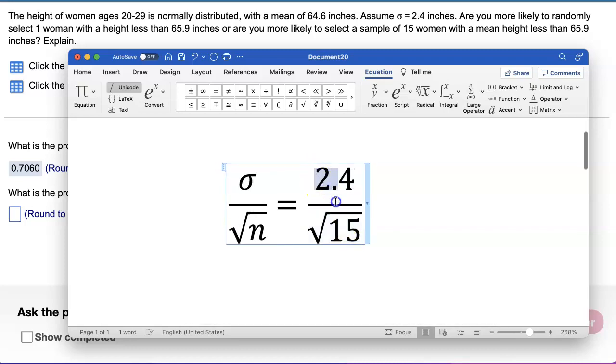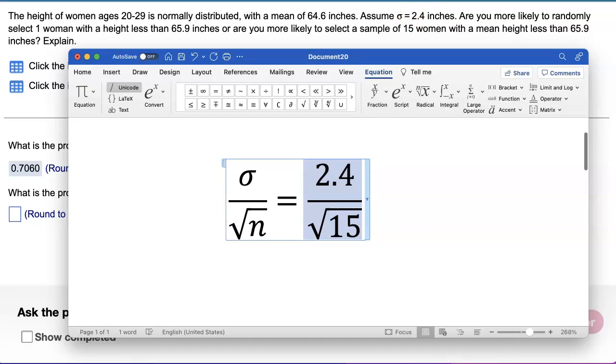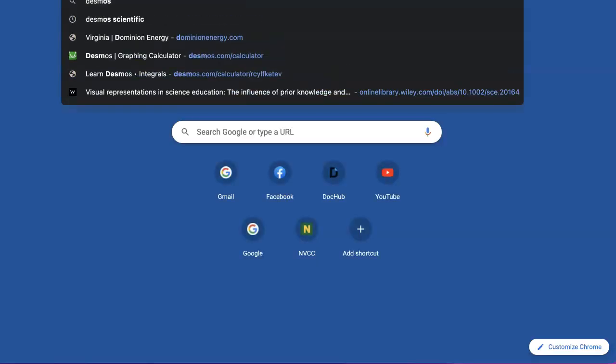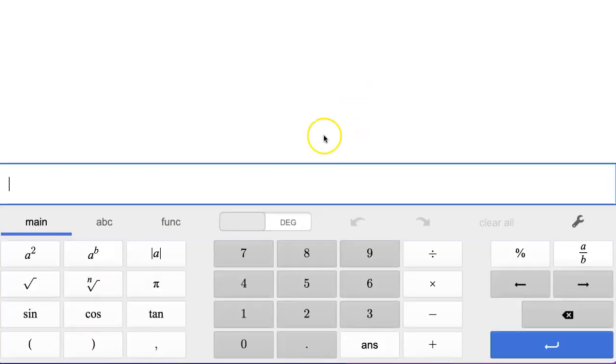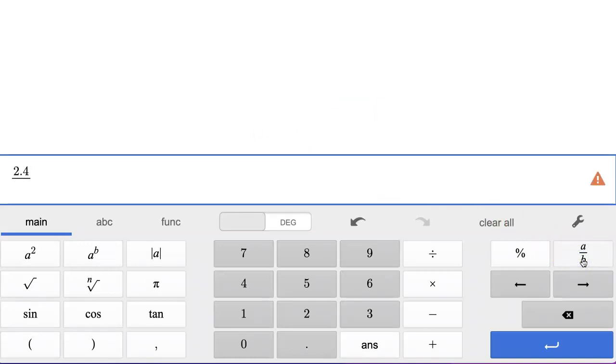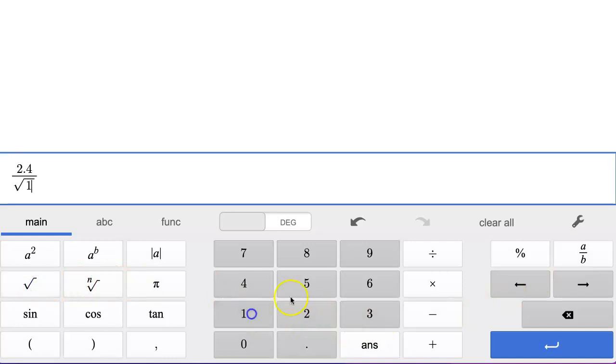So I need a calculator to enter that. So I'm going to open up Desmos scientific calculator and type in 2.4 divided by square root of 15.